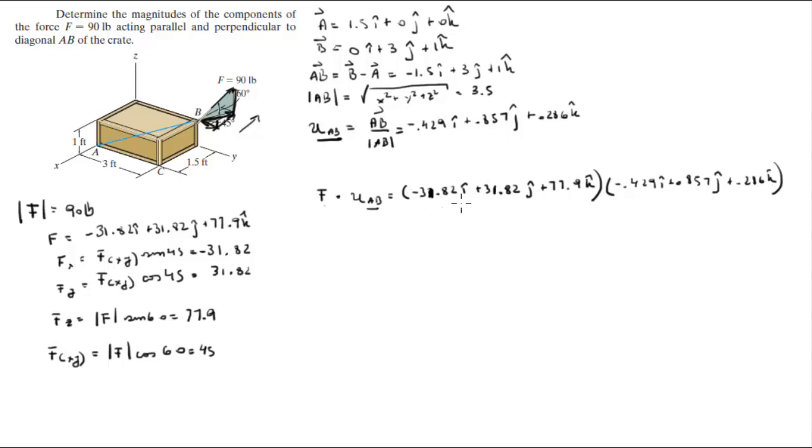Now 31.82 times negative 0.429 comes out to be 13.65, which is positive because negative times negative is positive, plus 31.82 times 0.857 is 27.27, plus 77.9 times 0.286 is 22.28.